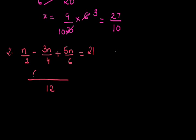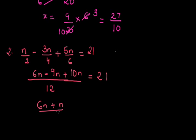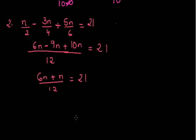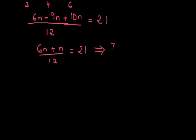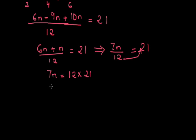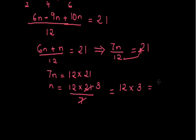12 divided by 2 is 6, so 6n minus — 12 divided by 4 is 3 — 3 into 3n, so 9n, plus 10n is equal to 21 into 12 upon 12. That gives 6n minus 9n plus 10n upon 12 equal to 21, which simplifies to 7n upon 12 equal to 21. Shifting 12 to the right hand side, 7n is equal to 12 into 21. Dividing both sides by 7 and cancelling — 3 threes are 21 — the value of n will be 12 into 3, that is equal to 36.